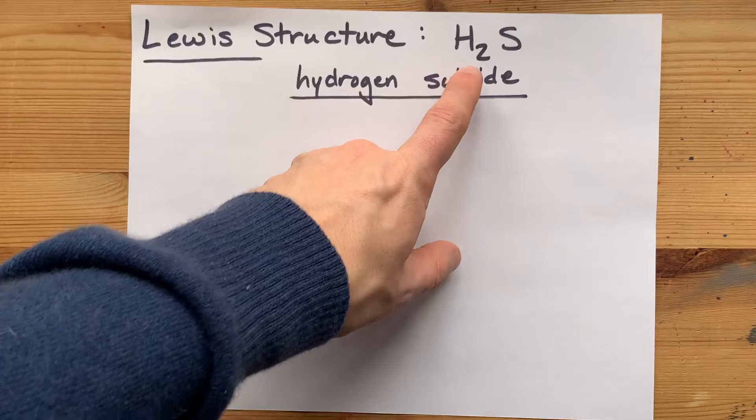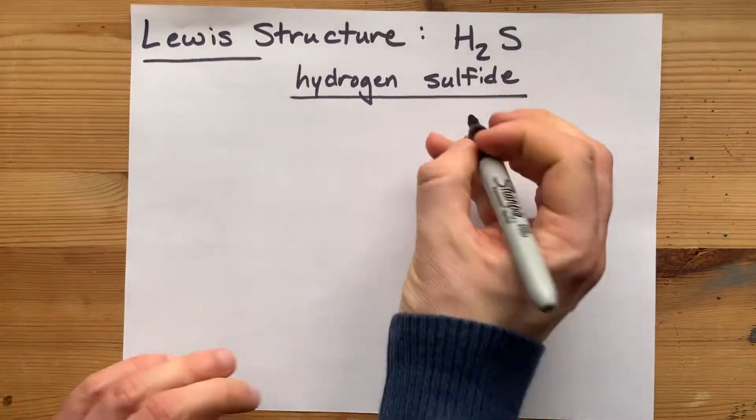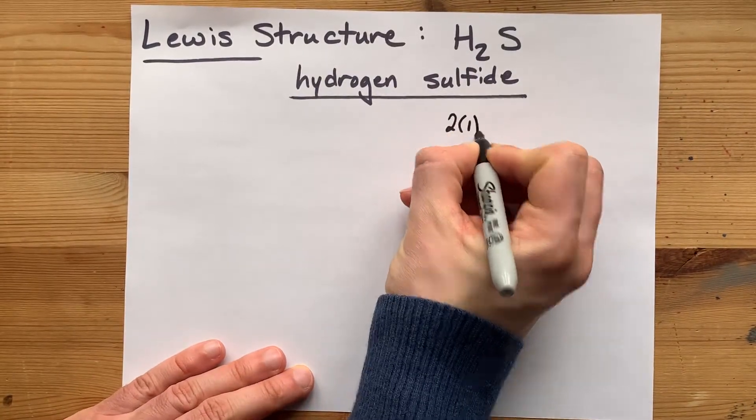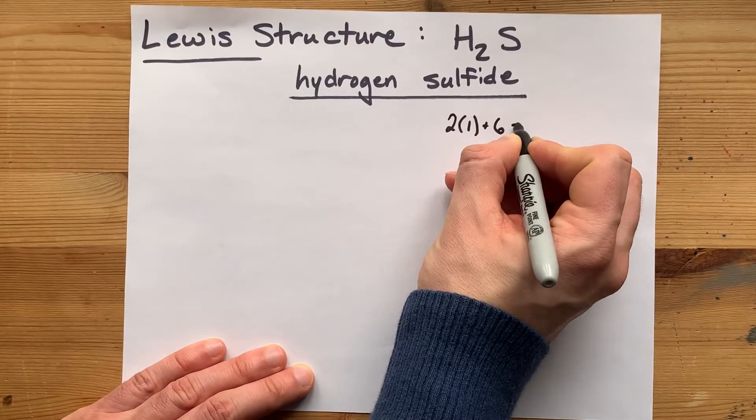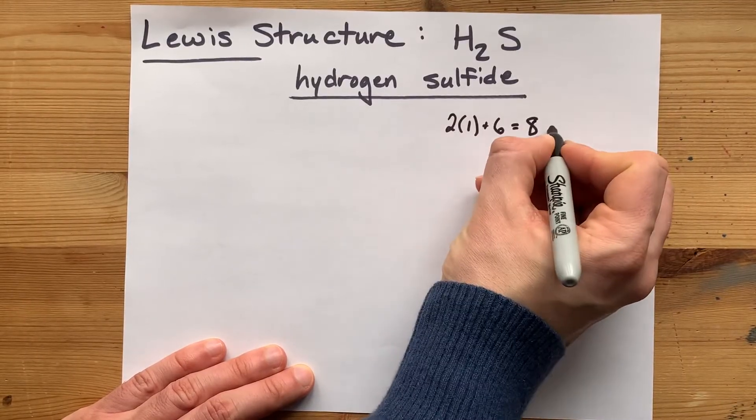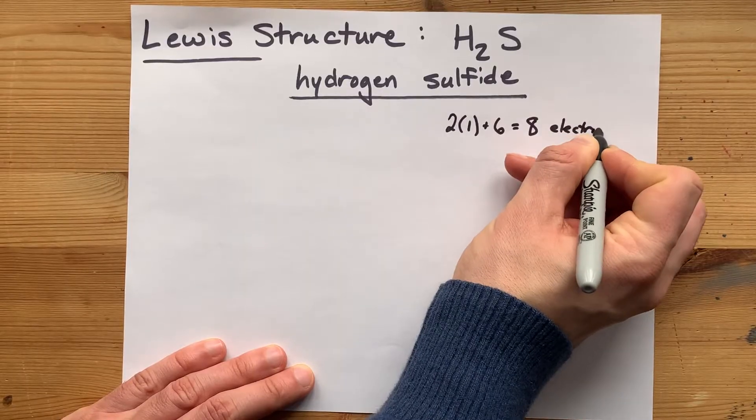So what that means is that two hydrogens at one valence electron each, combining with sulfur at six electrons, gives me eight electrons to deal with total in this Lewis structure.